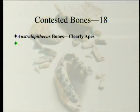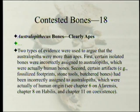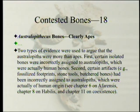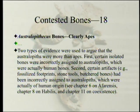Australopithecus bones are clearly apes. Two types of evidence were used to argue that australopiths were more than apes. First, certain isolated bones incorrectly assigned to the australopiths were actually human bones. Second, certain artifacts — fossilized footprints, stone tools, and butchered bones — had been incorrectly assigned to the australopiths when they were actually of human origin. See chapters 6 on Afarensis, 8 on Habilis, and 11 on coexistence.